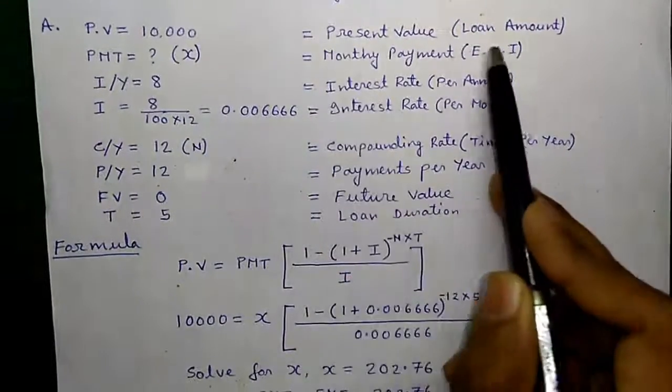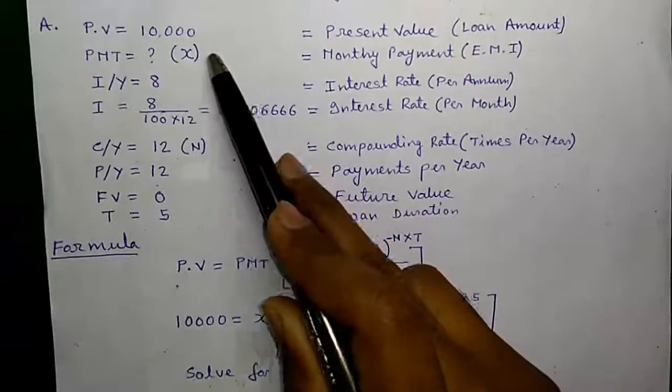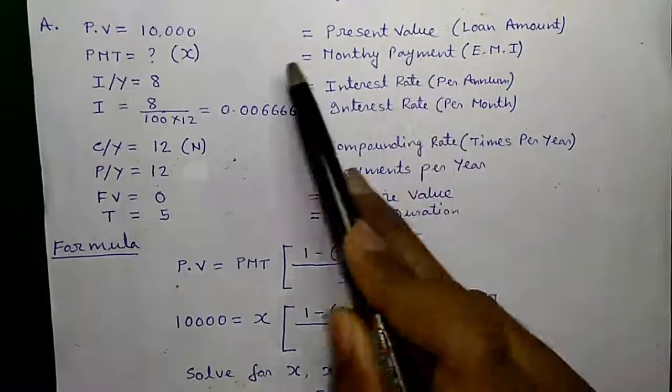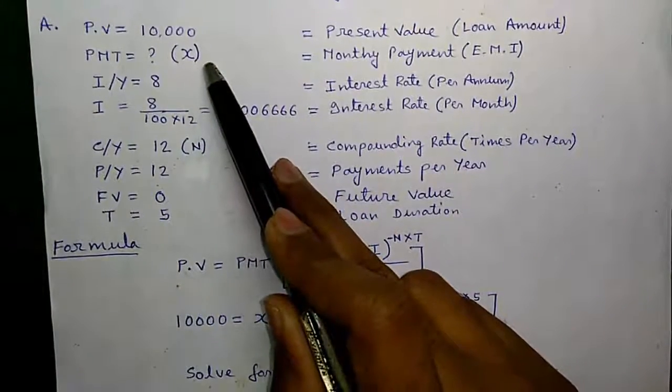PV or present value or the loan amount is $10,000. PMT or the monthly payment amount, also called EMI, that we have to find out. Let's call it X.